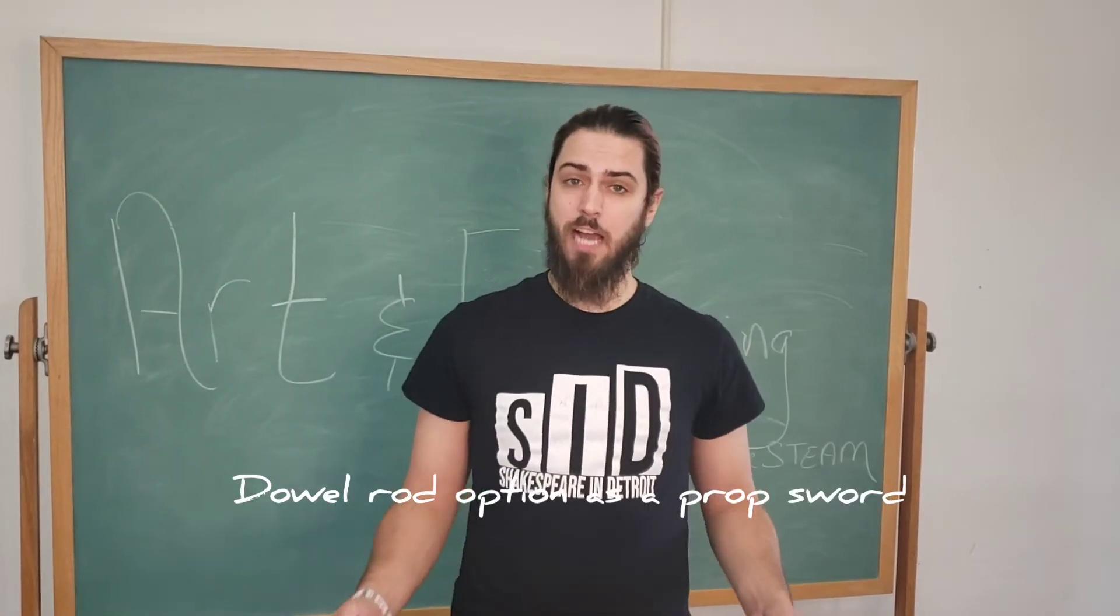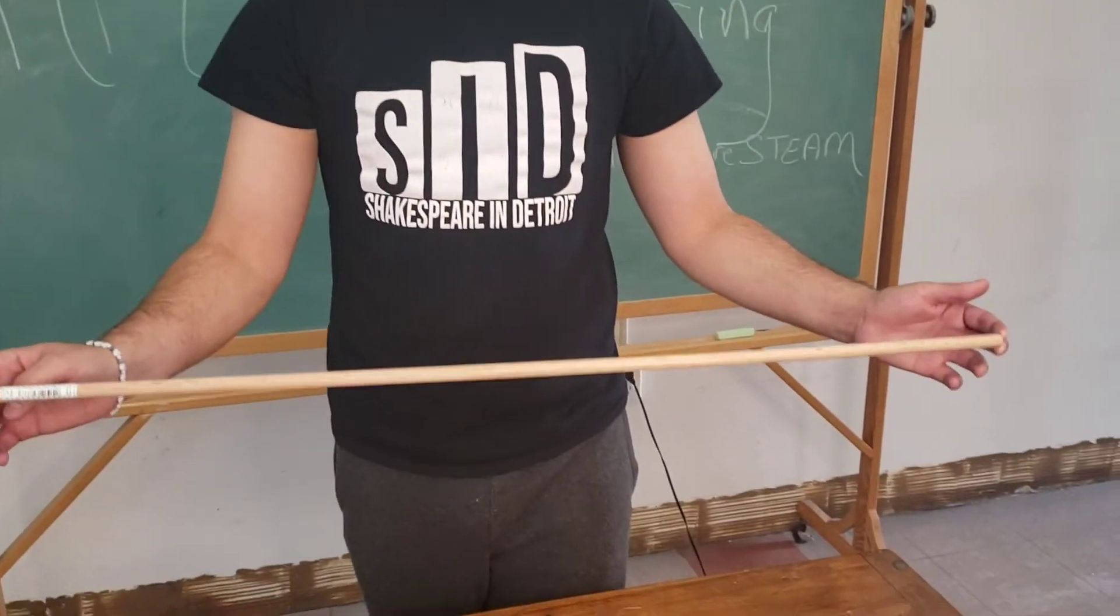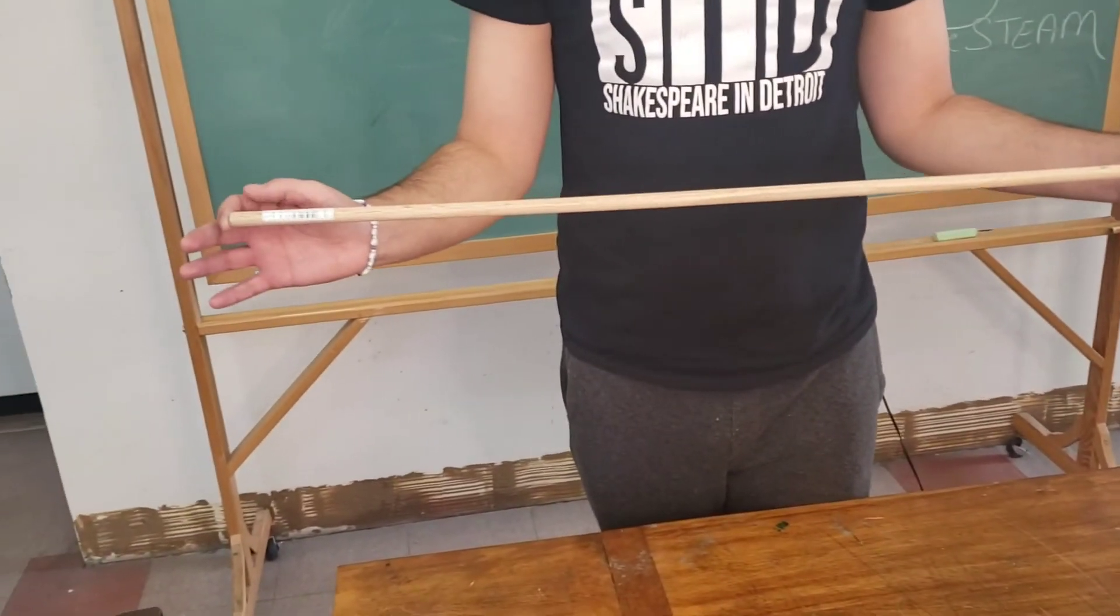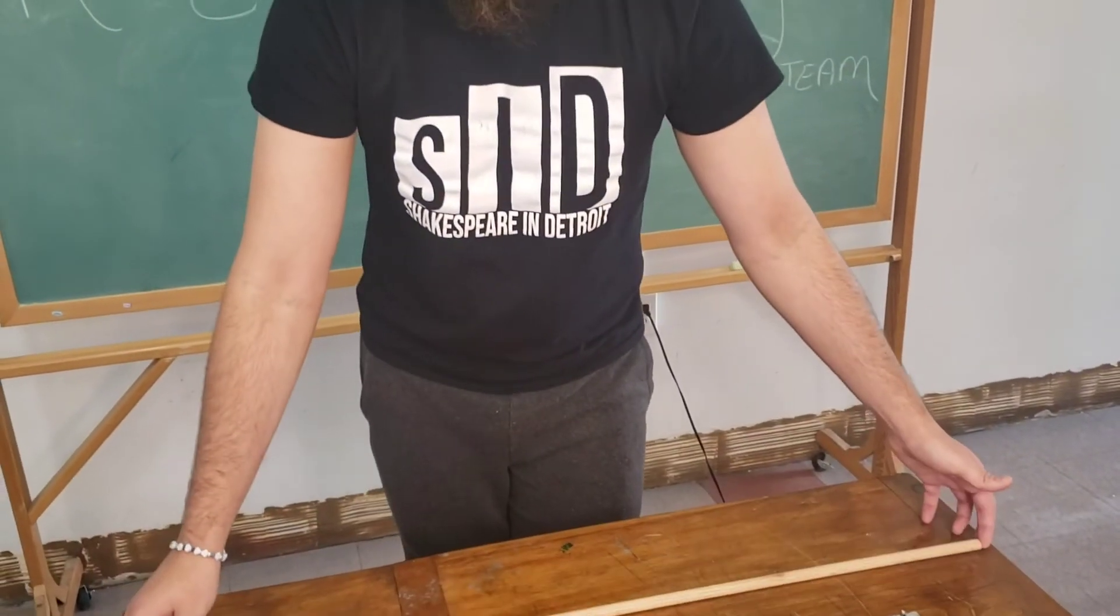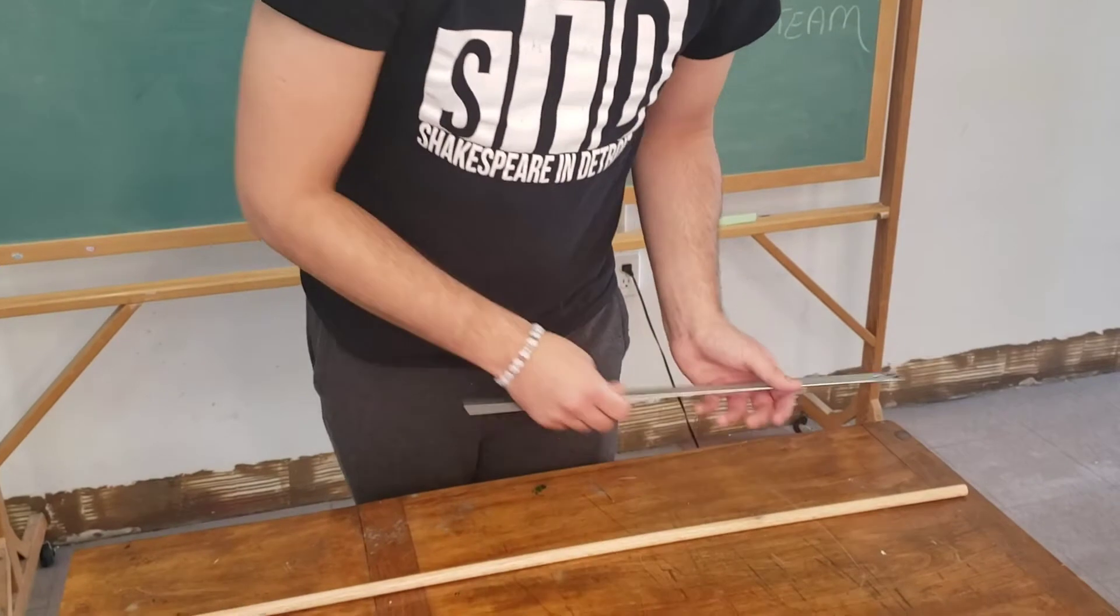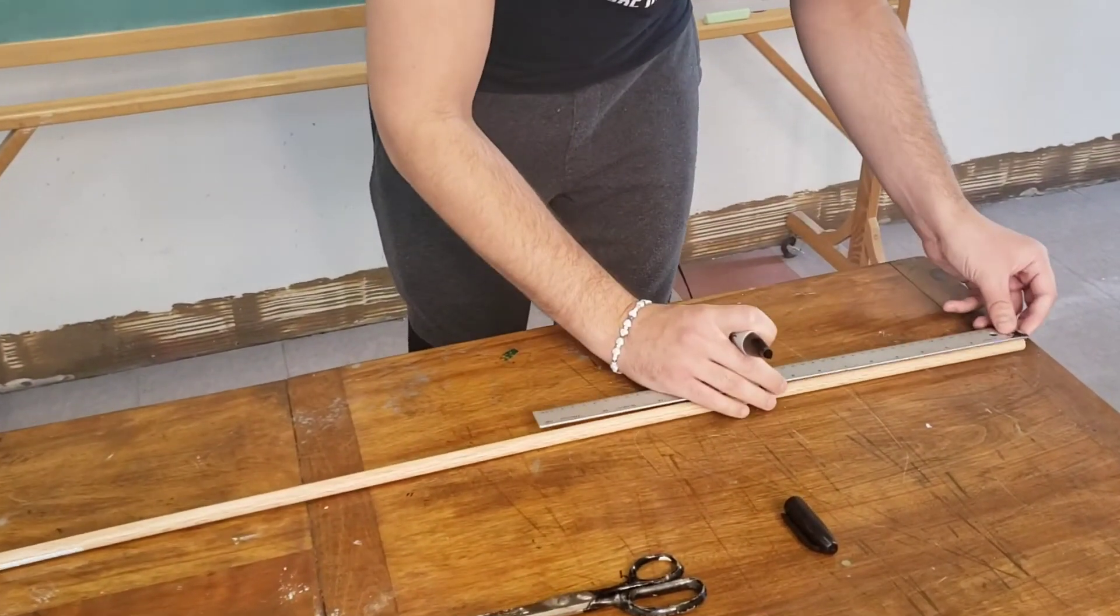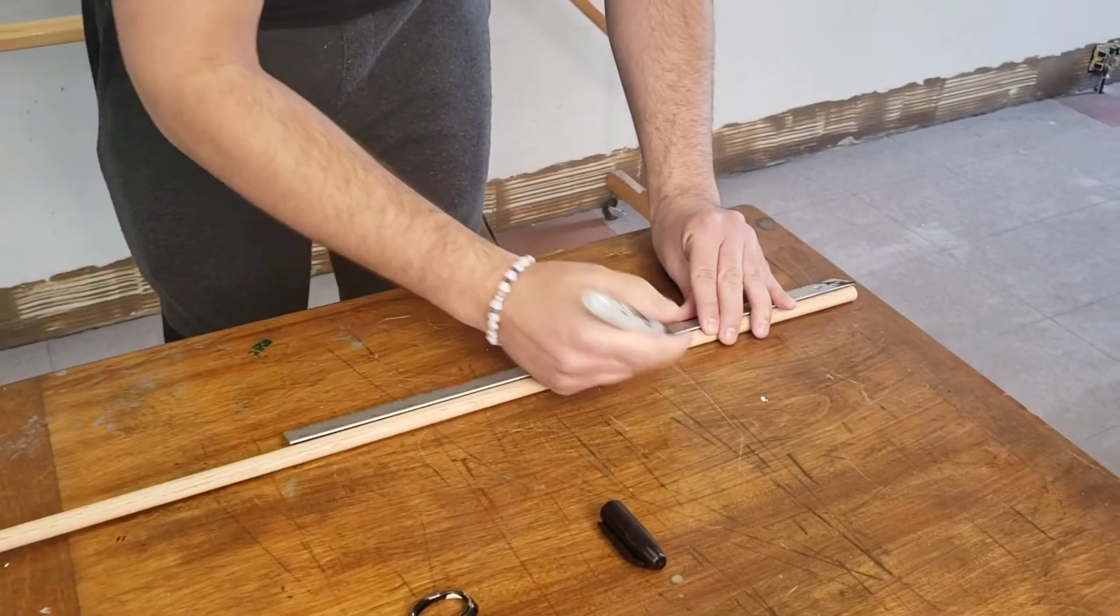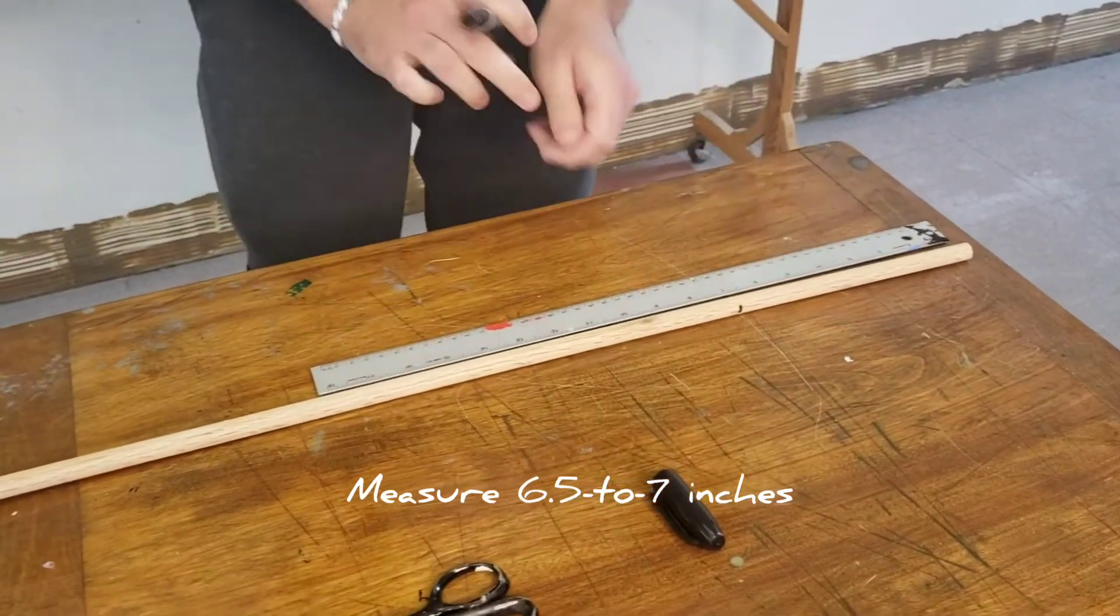Another option we have is using a dowel rod for our sword. Now, I'm using a half-inch dowel rod at a length of 36 inches, which is a little bit shorter than the average blade, but if we're in tight spaces, it works very well. So again, like with the PVC piping, we'll measure about 6 and a half to 7 inches up our blade, make our mark, and that is where the quions in your handle will end.